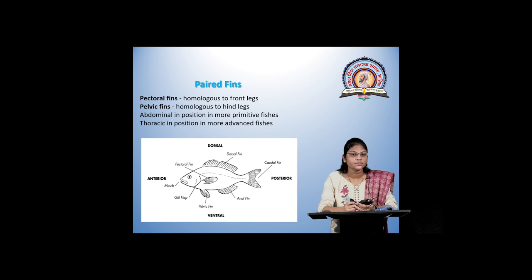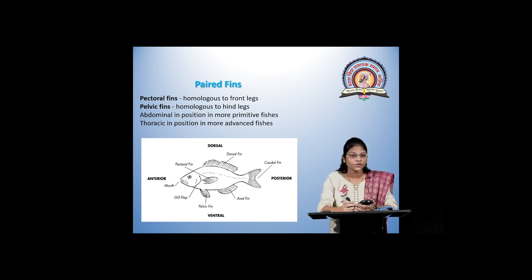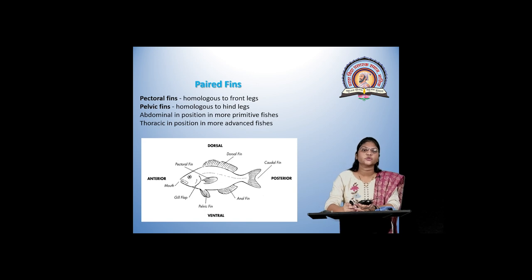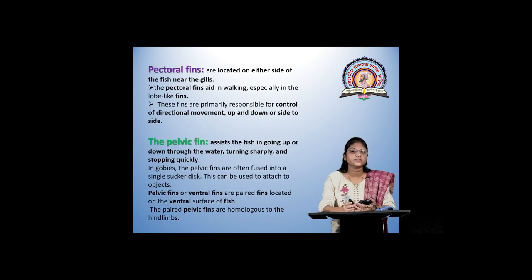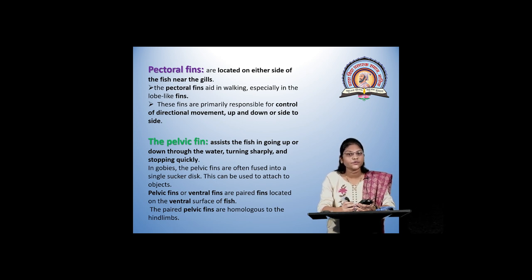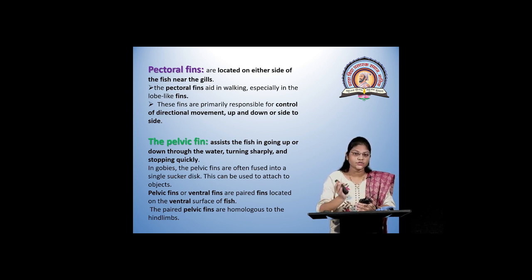Now let us discuss paired fins. There are two types: pectoral fins, which are homologous to the front legs of animals, and pelvic fins, which are homologous to the hind legs of animals. These fins are sometimes attached to the abdominal region or sometimes to the thoracic region. Pectoral fins are located near the gills at the anterior side. These are adapted for walking, especially in lobe-like fins, and control directional movement up and down or side to side.